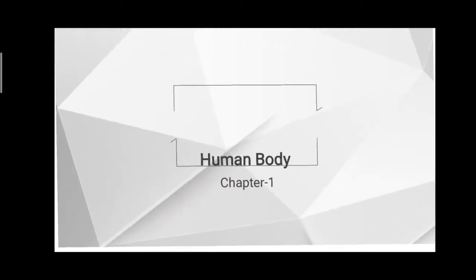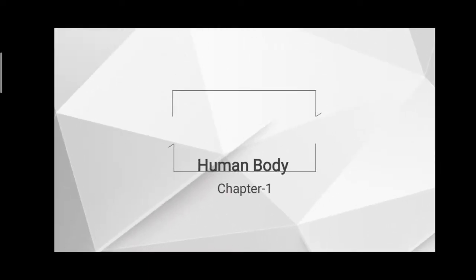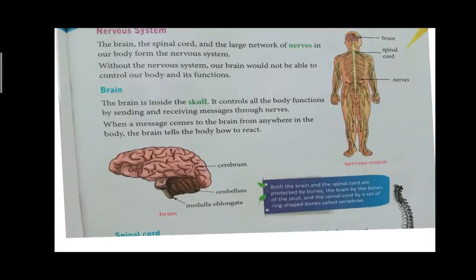What's the topic of the first chapter we are learning? Human body. We are learning about our own bodies. What are the topics we have already learned? We have learned about the respiratory system, muscular system, skeletal system, and digestive system. Today we are going to learn the next topic: nervous system.